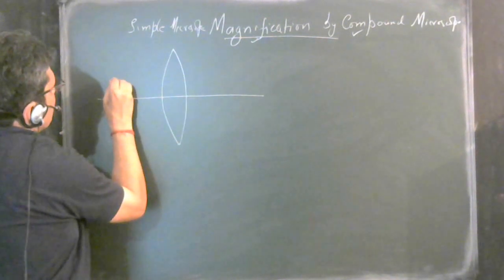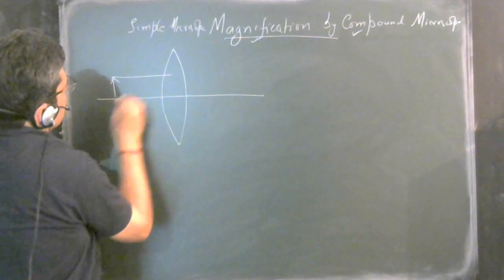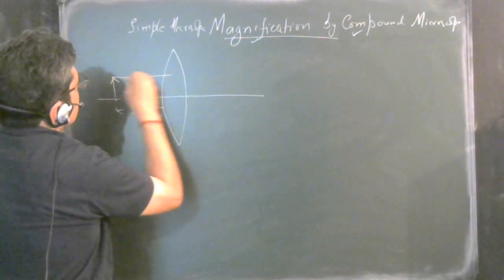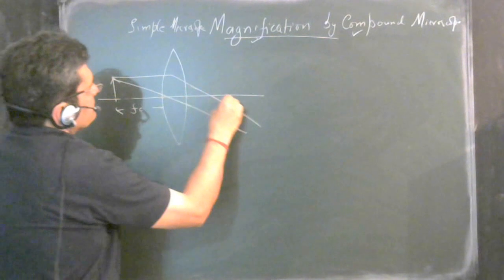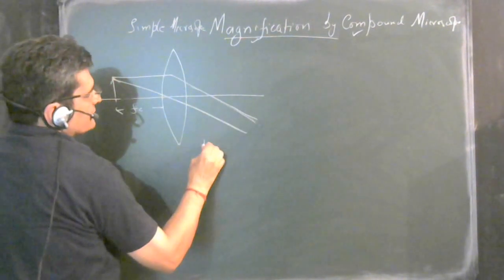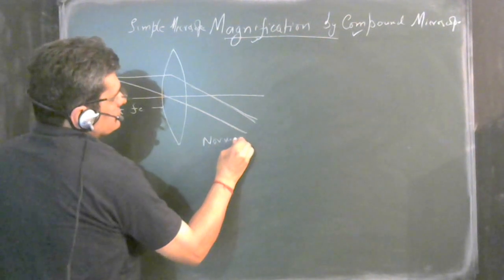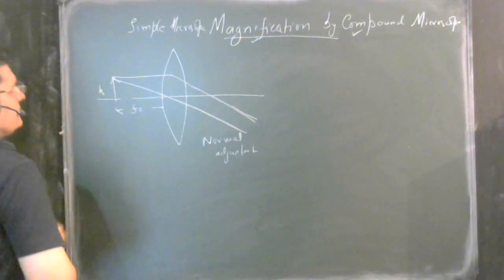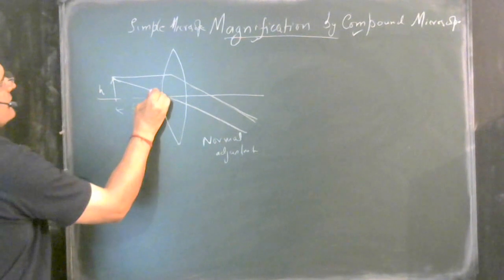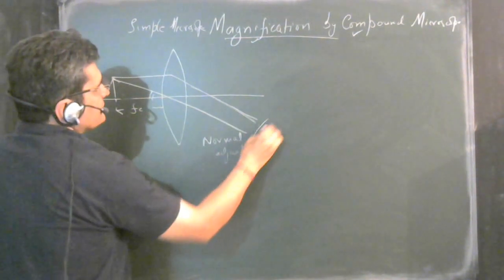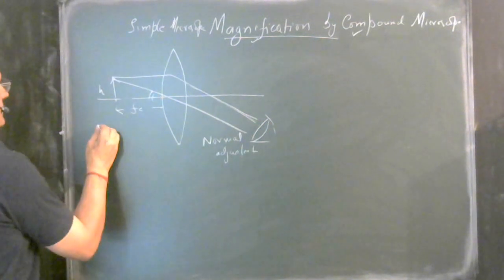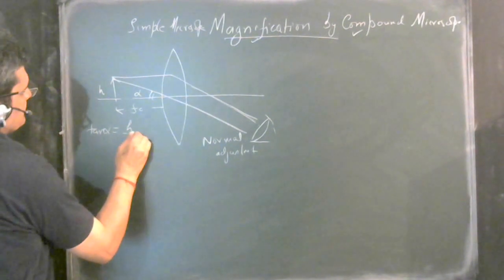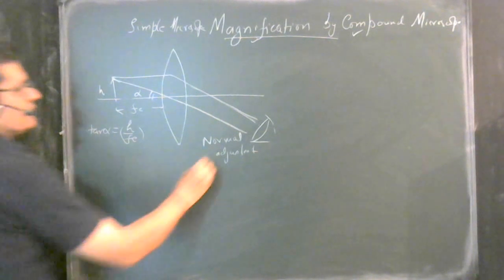In the case of a simple microscope, you have an object and when you place it at the focal length you get an image — we call this normal adjustment. This is the height of the object, and this is the angle subtended by the image on the eye. We write this as alpha, so tan α = H / Fe. This is for normal adjustment.